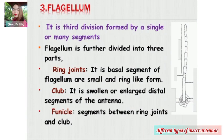The third is the flagellum. It is the third section formed by a single or many segments. The flagellum is further divided into three parts: first, the ring joints, which are the basal segments of the flagellum in a small ring-like form; second, the club, which are the swollen or enlarged distal segments of the antenna; and third, the funicle, the segments between the ring joints and the club.